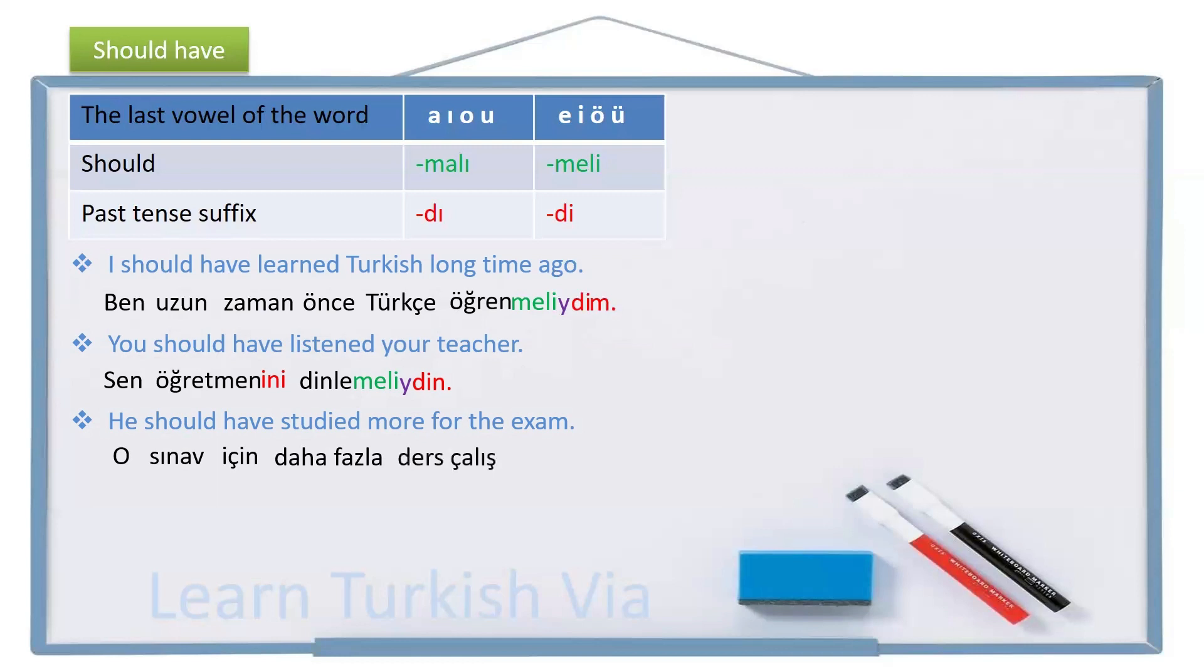Should study, ders çalışmalı, should have studied, ders çalışmalıydı, with the buffer letter. For he and she, we don't have personal pronoun suffix, so that's it. He should have studied more for the exam. O, sınav için, daha fazla ders çalışmalıydı.